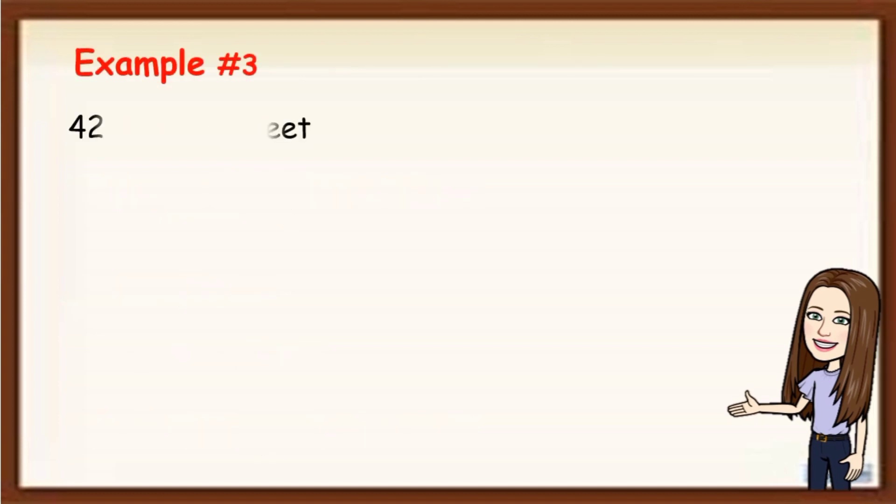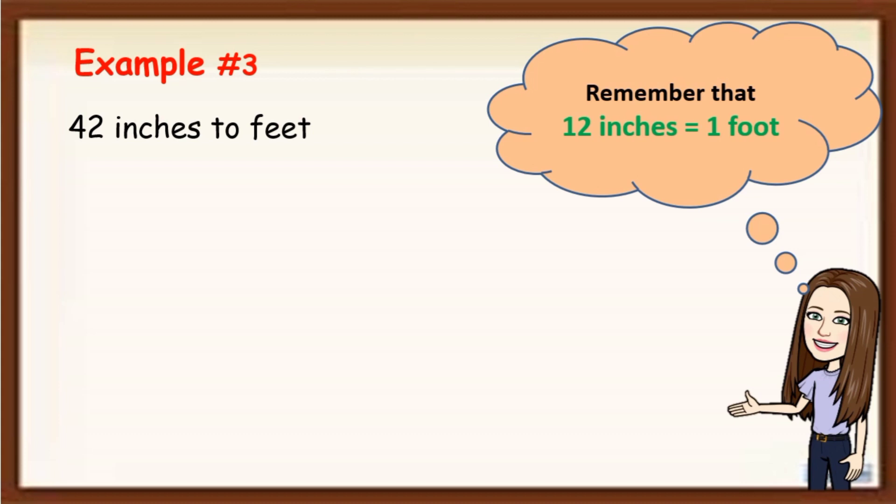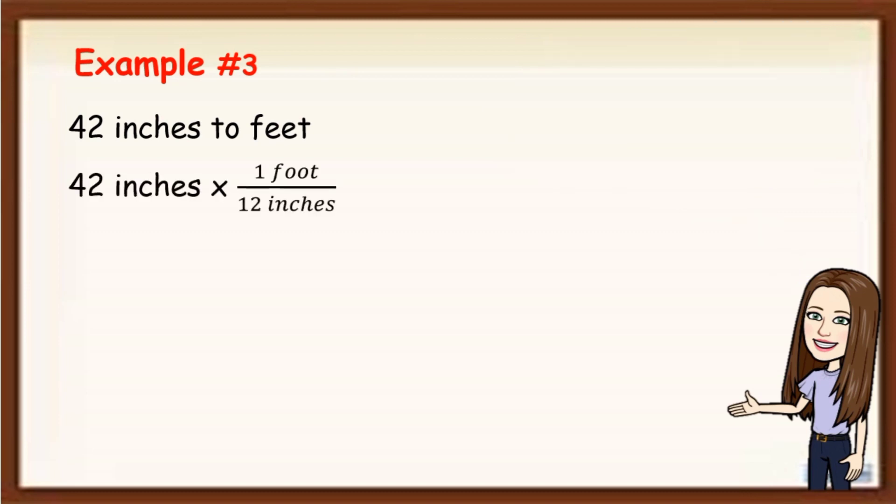Convert 42 inches to feet. Remember that in 12 inches, it is equal to 1 foot. To find how many feet in 42 inches, we write it like this: 42 inches times 1 foot over 12 inches. Why 1 foot over 12 inches? Because there is 1 foot in 12 inches. Since we are looking for the foot, we are going to cancel the inches. Then simplify.